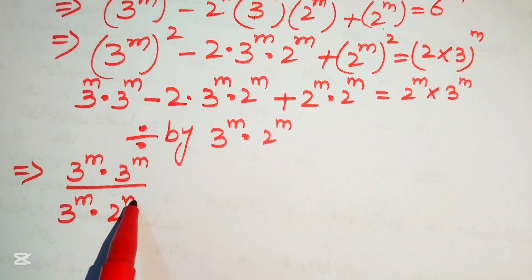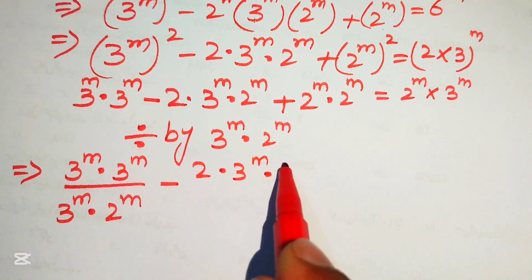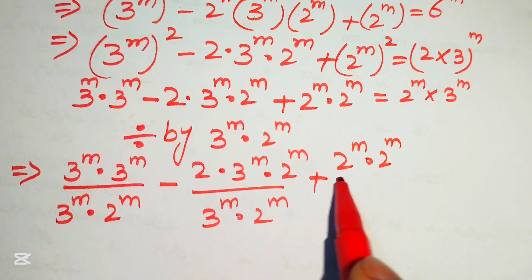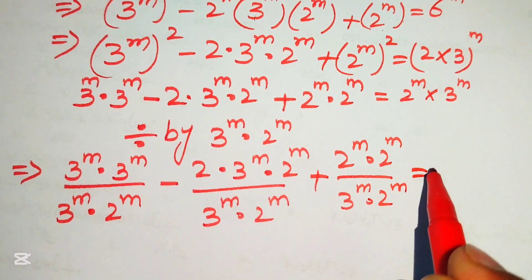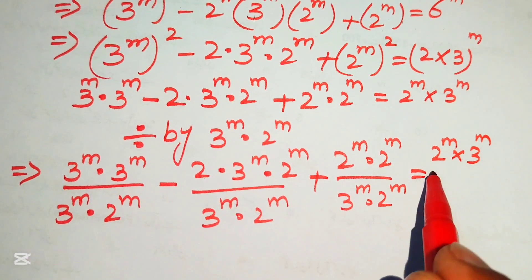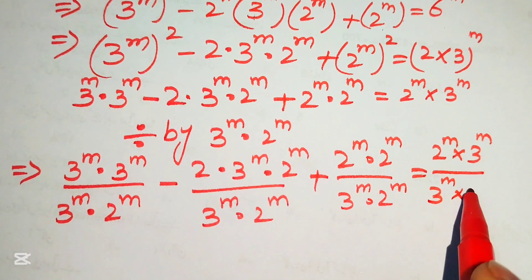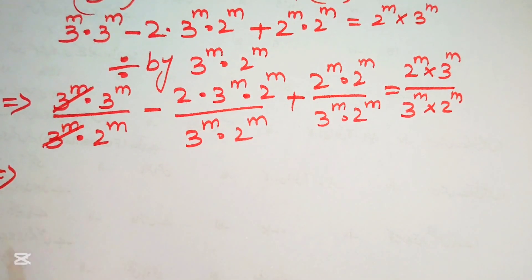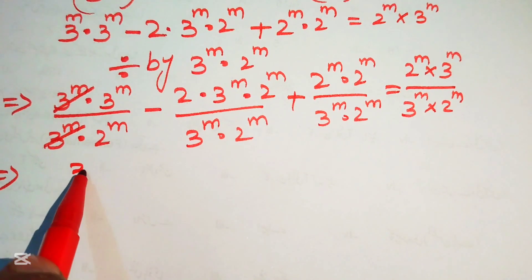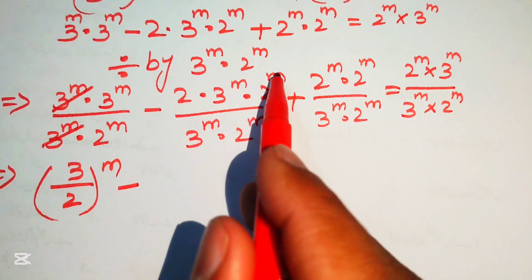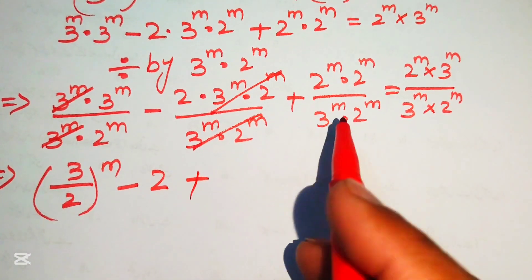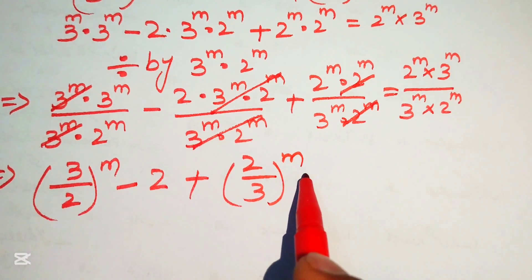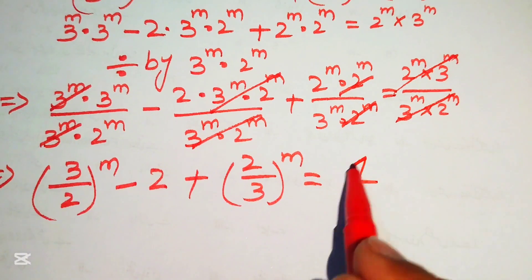After simplification, terms cancel. The first term becomes (3/2)^m, the middle terms cancel to give -2, and the last term becomes (2/3)^m. The right-hand side cancels to 1. So we have (3/2)^m - 2 + (2/3)^m = 1.